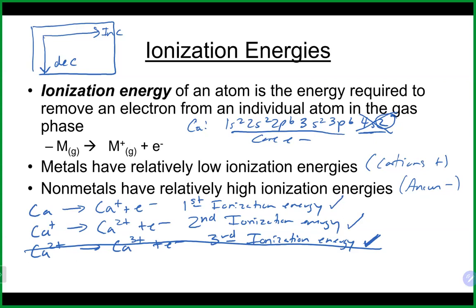To rip off that third electron is way too much energy and it just doesn't happen because it's a core electron. Atoms typically do not lose those core electrons — just the valence electrons get lost. That's why things in group 2 typically will only make a +2 charge. The easiest way is by the group number: look on the periodic table, calcium is in group 2, so it has two valence electrons.